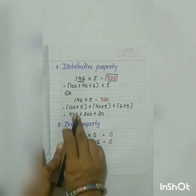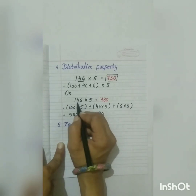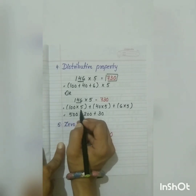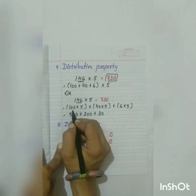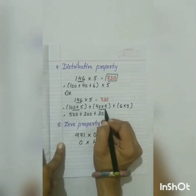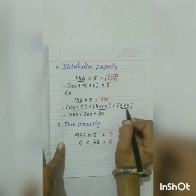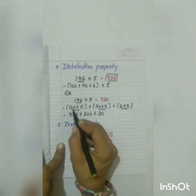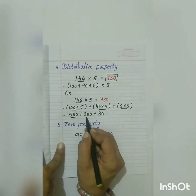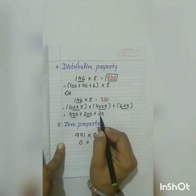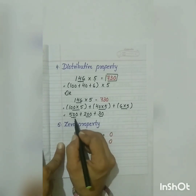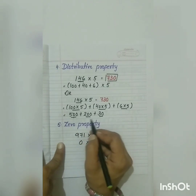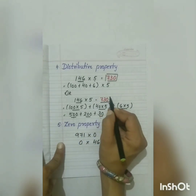Or we can do it another way — we can split 146 and multiply each value with the multiplier separately. So 100 multiplied by 5, plus 40 multiplied by 5, plus 6 multiplied by 5. We have already done this in expanded form of multiplication. 100 multiplied by 5 gives 500; 40 multiplied by 5 gives 200; 6 multiplied by 5 gives 30. Then we add them all: 500 plus 200 is 700, and 700 plus 30 gives our product 730.